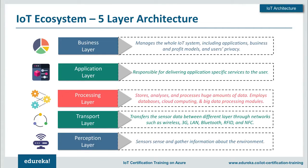This architecture can also be expanded to a five-layer architecture. The difference mostly comes with the transport layer, processing layer, and business layer. The perception layer remains the same. The transport layer carries data between sensors and the processing center — through wireless, Bluetooth, RFID, 3G, NFC, or other media. The processing layer stores, analyzes, and processes the data using databases, cloud computing, and big data processing modules.